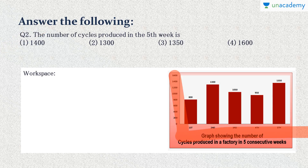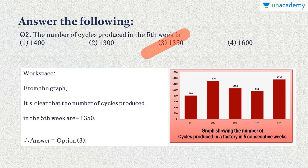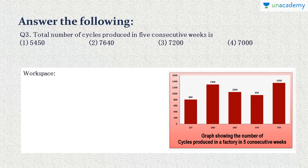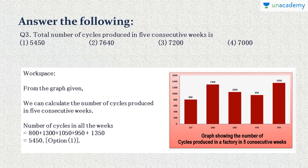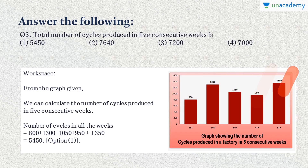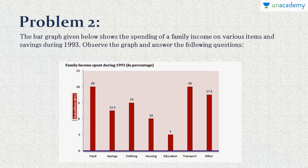Question 3: Total number of cycles produced in five consecutive weeks. We simply add all the values: 800 + 1300 + 1050 + 950 + 1350 = 5450. Option 1 is correct. Problem 2: The bar graph given below shows the spending of a family income on various items and savings during 1993.